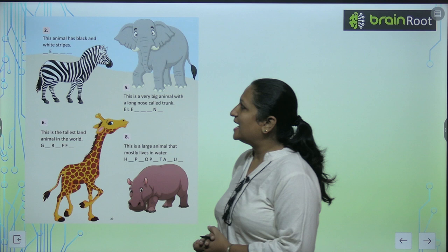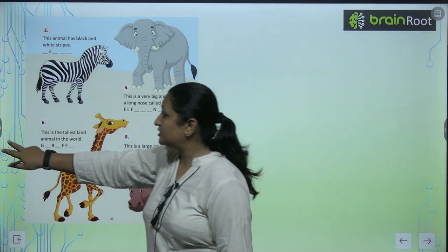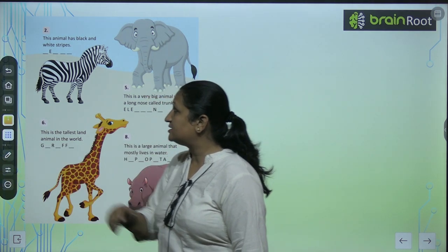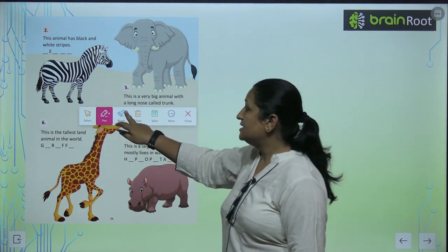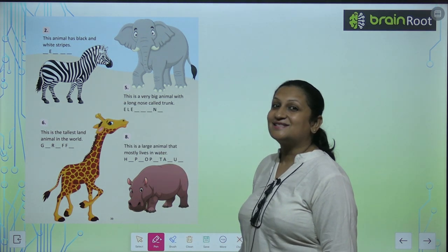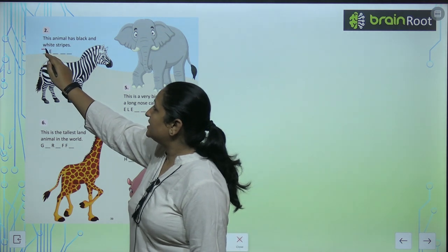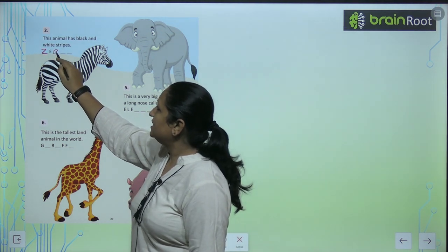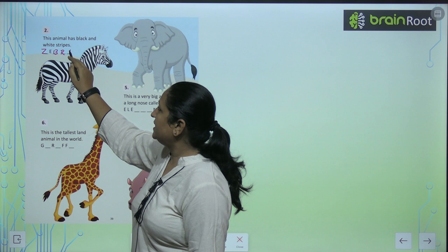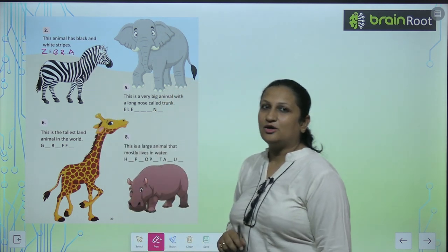This animal has black and white stripes. Which animal is like this, that has black and white stripes? Everyone knows this answer. The answer is zebra. So you will write Z-E-B-R-A here. This is the complete spelling of zebra.